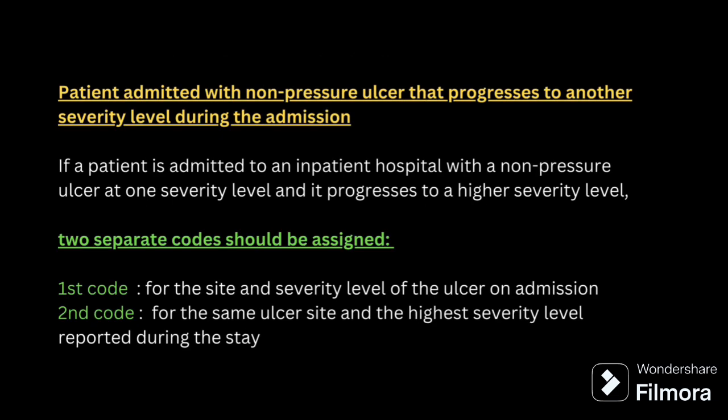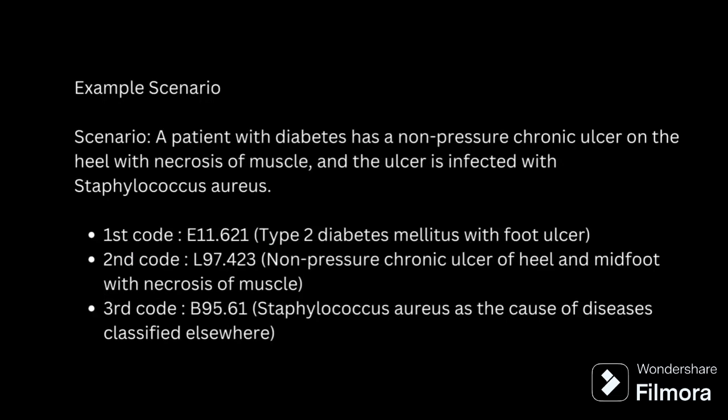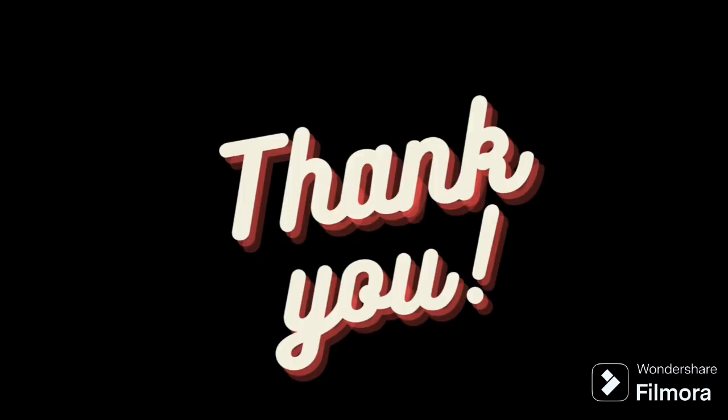For a patient admitted with a non-pressure ulcer that progresses into another stage, we have to assign two codes: first, site and stage at the time of admission; second, code for site and highest stage during stay. For example, a patient with diabetes has a non-pressure chronic ulcer. First, code for the type of diabetes; second, code for the non-pressure chronic ulcer; third, code for the causative organism if mentioned. In this example, it is infected with Staphylococcus aureus, so we code for the organism. That is all about Chapter 12 guidelines — it is a very simple guideline.